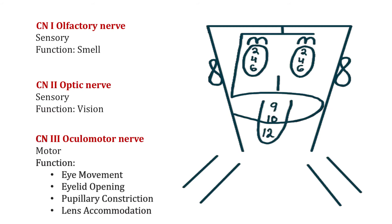Now let's review the functions of each cranial nerve. Cranial nerve 1, the olfactory nerve, is a purely sensory nerve responsible for the sense of smell — that's why we draw it like a person's nose. Cranial nerve 2, the optic nerve, is again a purely sensory cranial nerve responsible for vision — drawn like a person's eyes.